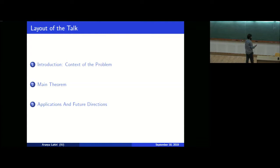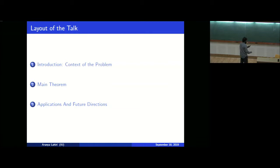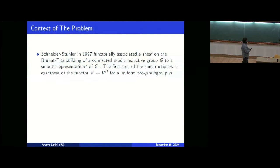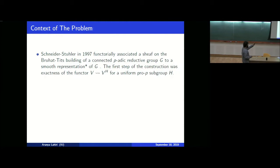Like any mathematical idea, it's impossible to give a full historical description of the motivation in five minutes. I'll just conveniently choose what can work as motivation towards the problem. In 1997, Schneider and Stuhler had a paper where they functorially associated to any smooth representation — with some extra conditions — of a connected reductive group G, a sheaf on the Bruhat-Tits building of G.